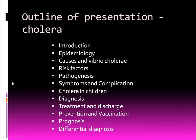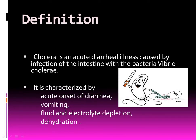Cholera is the acute diarrheal illness caused by infection of the intestine. The infection is caused by the bacteria Vibrio cholerae. It is a bacterial infection characterized by acute onset of diarrhea, vomiting, and fluid loss that leads to dehydration.